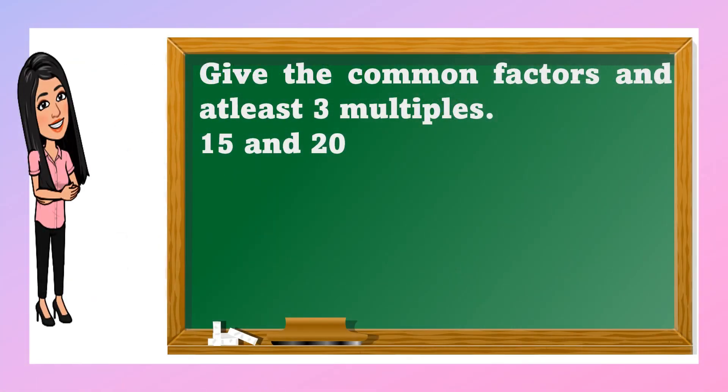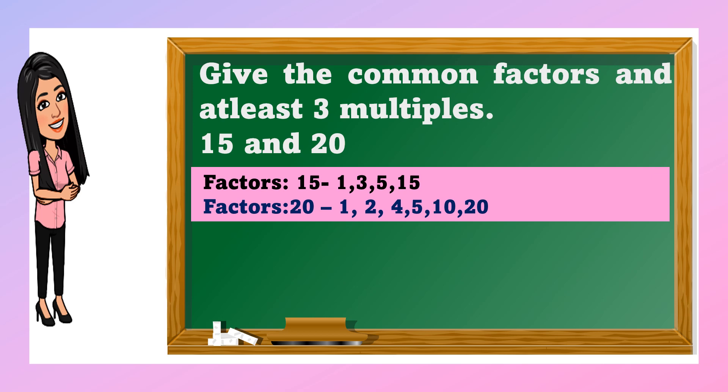Now, let us have this example. Give the common factors and at least 3 multiples. Our example here is 15 and 20. First, we need to get the factors of 15 and 20. The factors of 15 are 1, 3, 5, 15. And the factors of 20 are 1, 2, 4, 5, and 10. The common factors are 1 and 5. That's it, get the common factors.